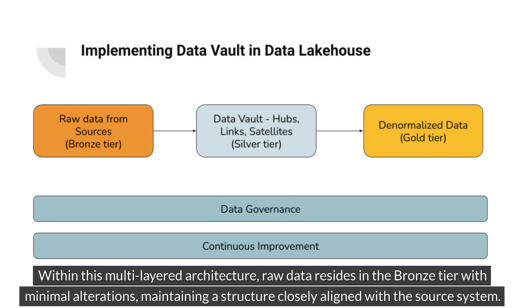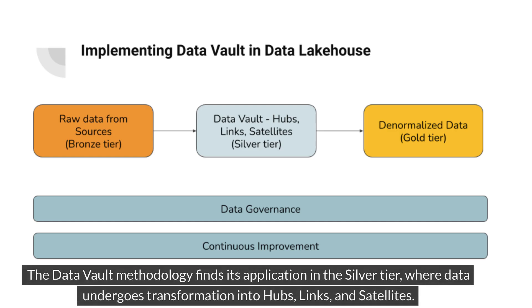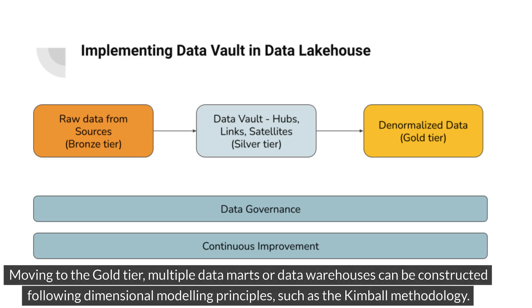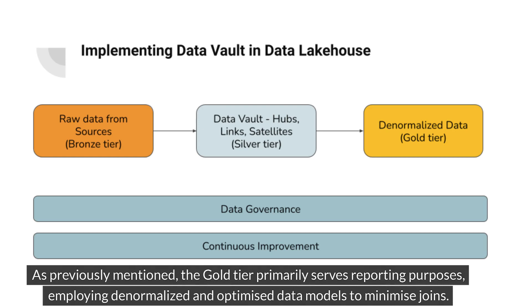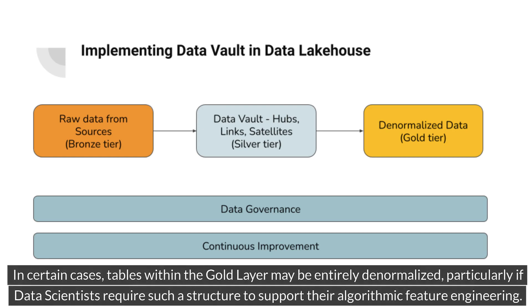Within this multi-layered architecture, raw data resides in the bronze tier with minimal alterations, maintaining a structure closely aligned with the source system. The Data Vault methodology finds its application in the silver tier, where data undergoes transformation into hubs, links, and satellites. Moving to the gold tier, multiple data marts or data warehouses can be constructed following dimensional modeling principles, such as the Kimball methodology. The gold tier primarily serves reporting purposes, employing denormalized and optimized data models to minimize joins. In certain cases, tables within the gold layer may be entirely denormalized, particularly if data scientists require such a structure to support their algorithmic feature engineering.